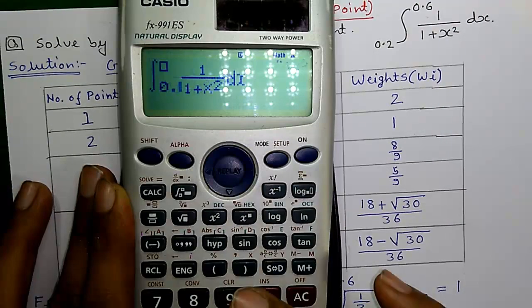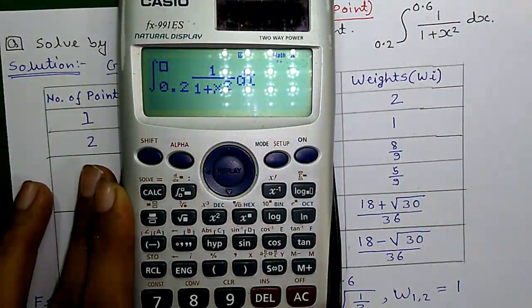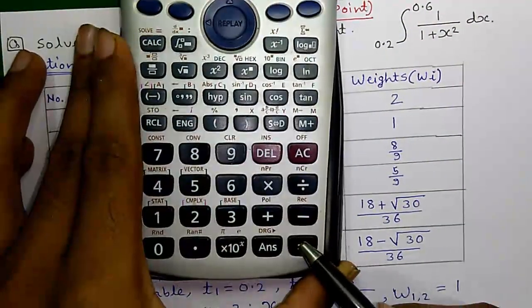Enter the lower limit 0.2, enter the upper limit 0.6 and press equals.